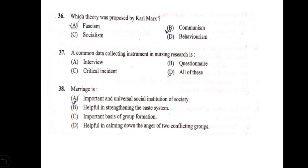Which theory was proposed by Karl Marx? Options: A) fascism, B) communism, C) socialism, D) behaviorism. Karl Marx is associated with Marxism and communism — the Communist Manifesto. Option B, communism, is correct.